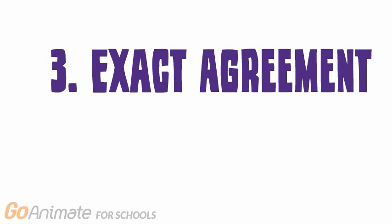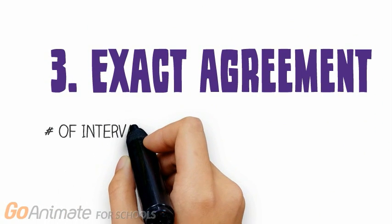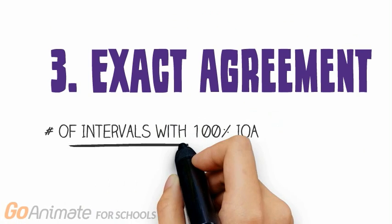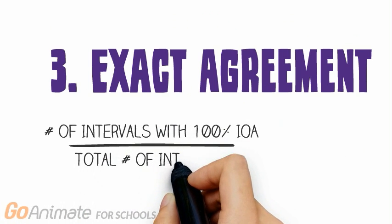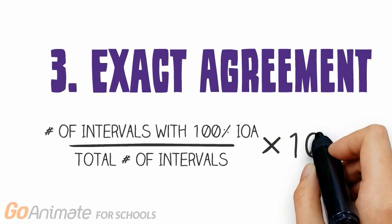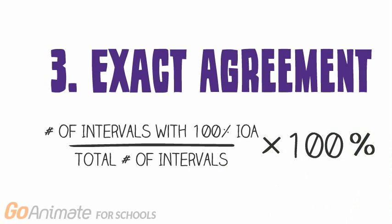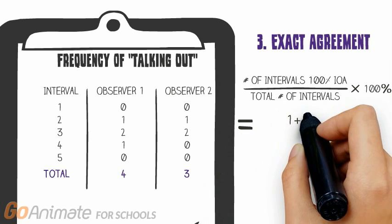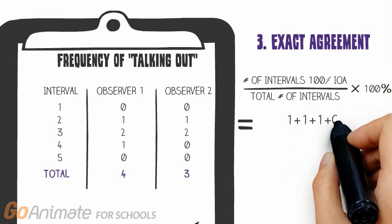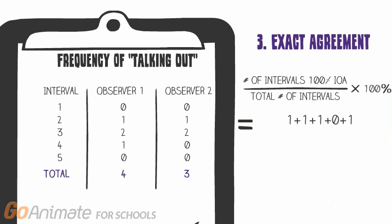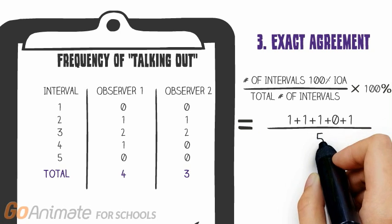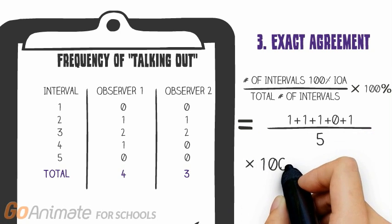The most conservative approach to IOA is the exact agreement approach. Using this measure, only exact agreements during an interval result in that interval being scored as a 1. Any disagreements will be scored as a 0. In our sample data, Observer 1 and 2 agreed on the number of instances of talking out during intervals 1, 2, 3, and 5, but disagreed on interval 4. So 4 intervals had a value of 1. Dividing by the number of intervals and multiplying by 100%, our IOA is 80%.